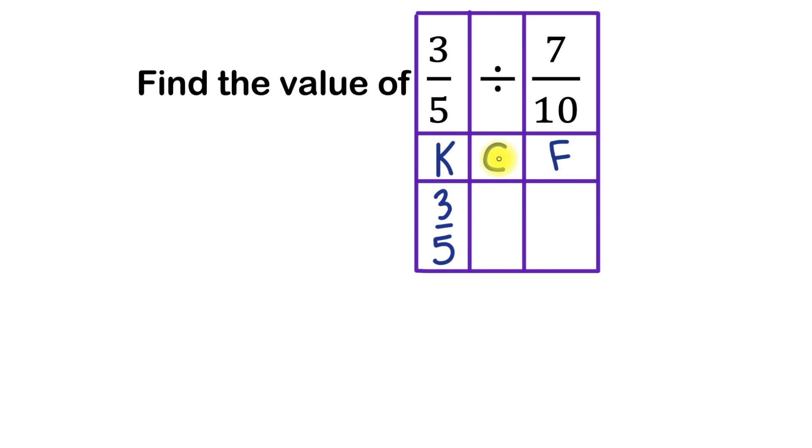The C stands for Change, and we're going to change division into multiplication. And the F stands for Flip. So here we have 7 over 10, we're going to flip it to become 10 over 7. And don't worry about the fact that it's an improper fraction, that doesn't matter at all.